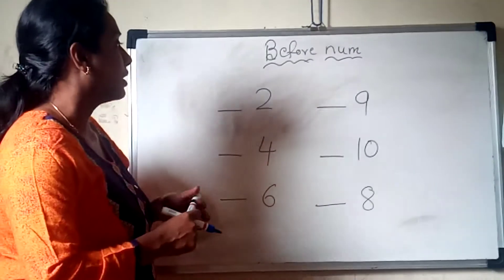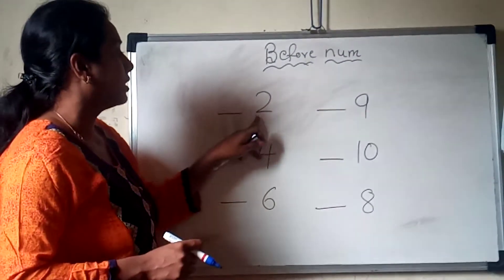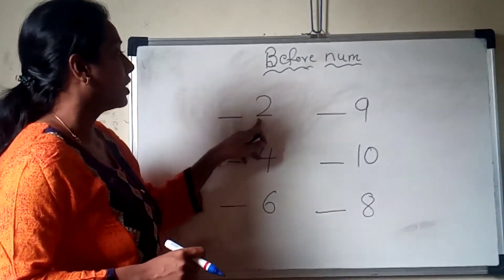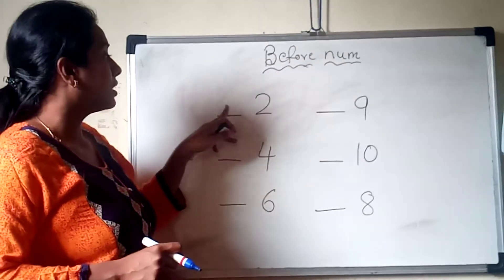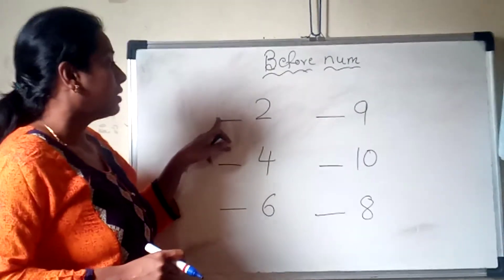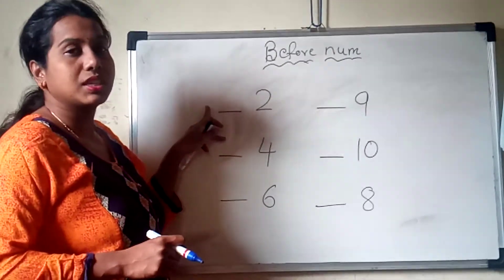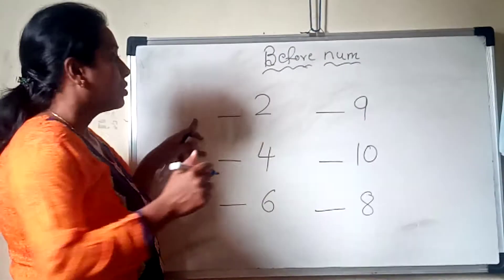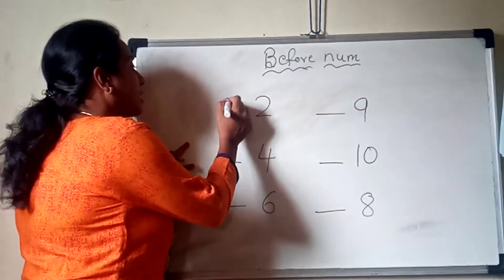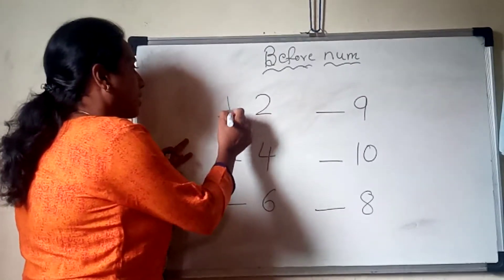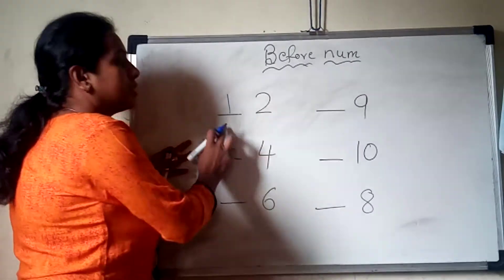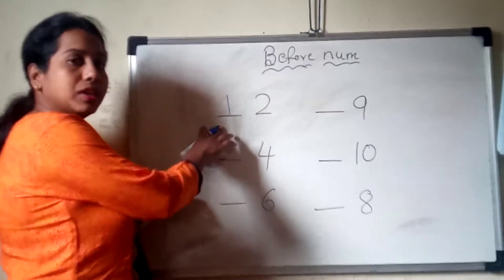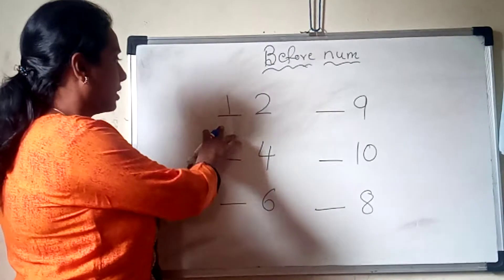Now look at the whiteboard here. I have written here 2. Which is the before number in this? Which number is missing here? 1. So we are going to write here 1. This we have written 1, our answer.